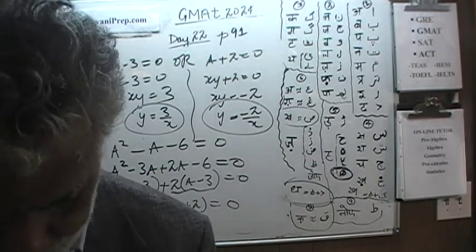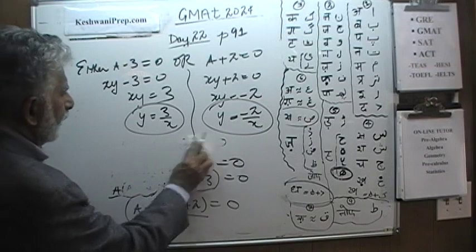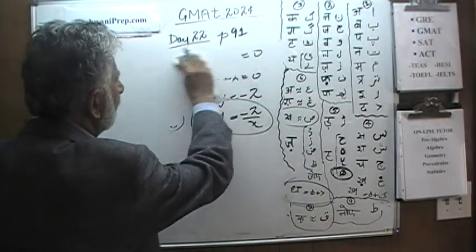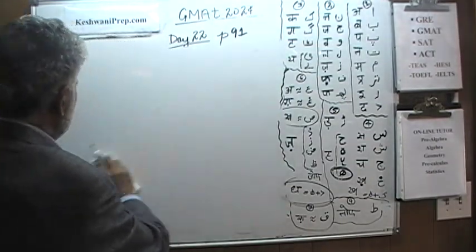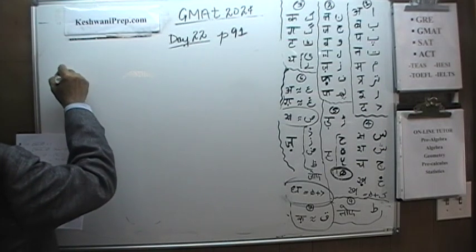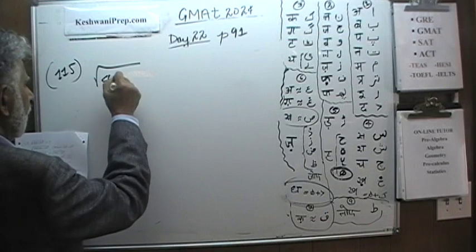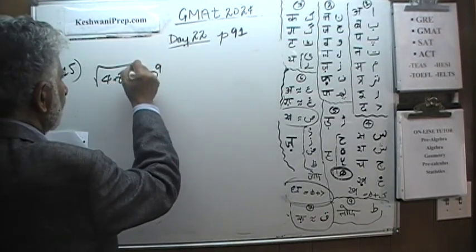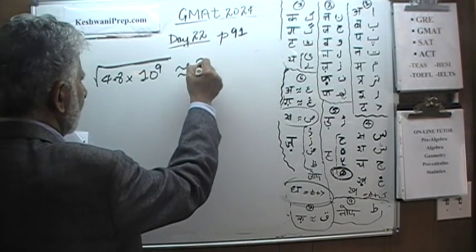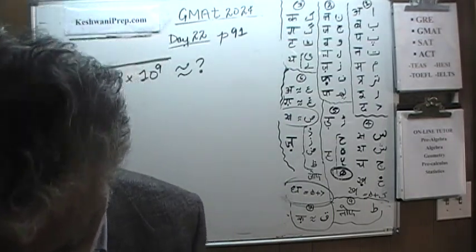Let's do 115. Problem 115 is asking us: the square root of 4.8 times 10 raised to the 9th power — how much is this approximately? That's all they are asking. Pause the video and do it yourself.